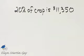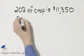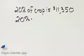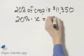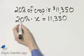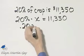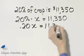Let's translate this to a percent equation. So that would be 20% of means times. We'll let X be the potential crop because that's what we're looking for is $11,350. I'll write down $11,350. Let's go ahead and write this as an equivalent decimal. That's 20 hundredths or two-tenths X is equal to $11,350.